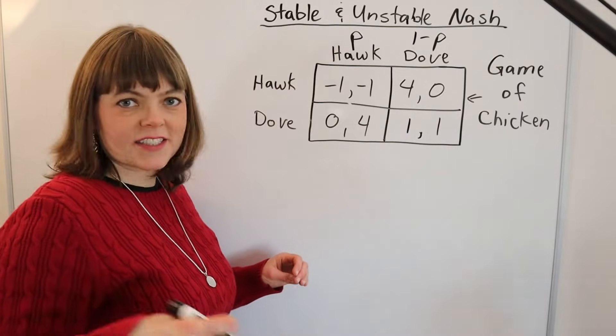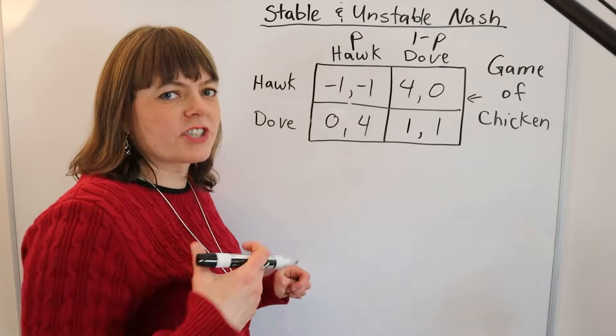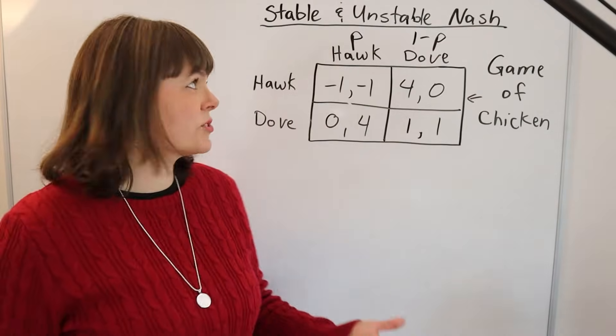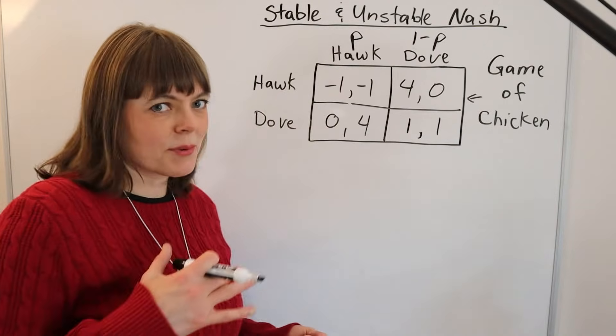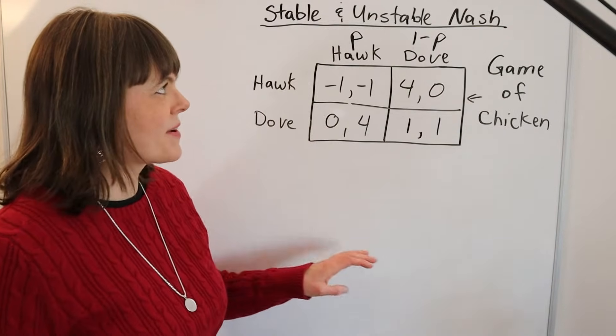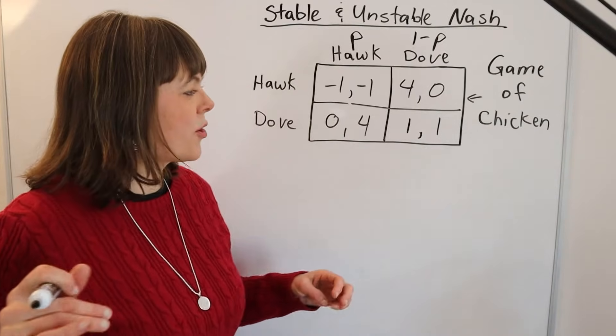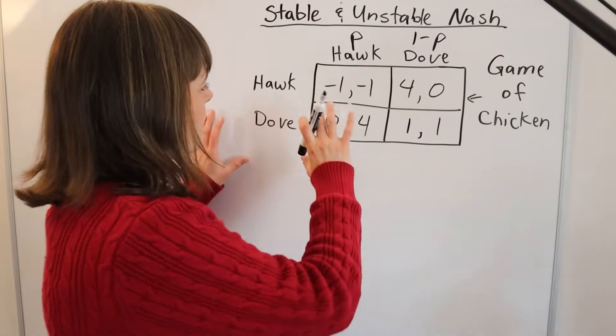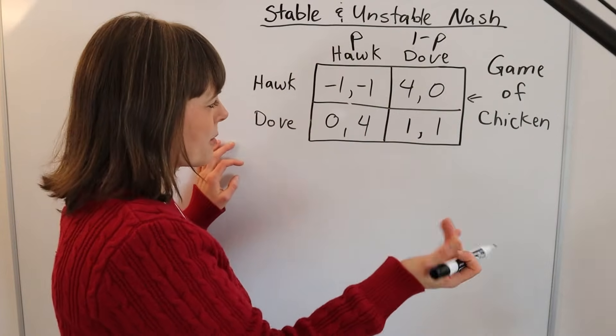In this video, I'm going to find the mixed strategy Nash Equilibrium of this particular game of chicken. This video goes along with another video I did on evolutionarily stable and unstable Nash Equilibrium. This game is actually stable—you can watch that in the other video. But today I want to go over how to find the mixed strategy Nash Equilibrium here.